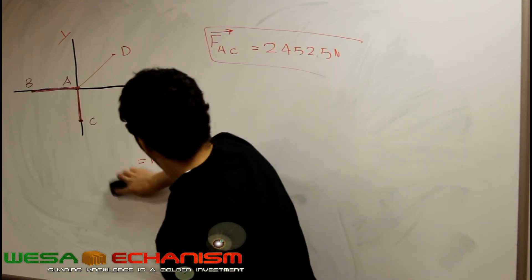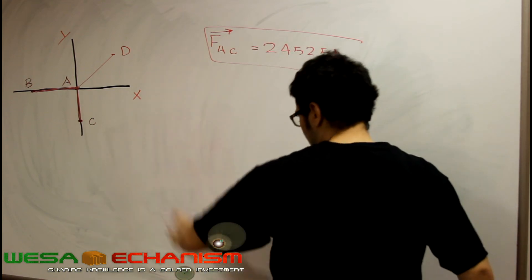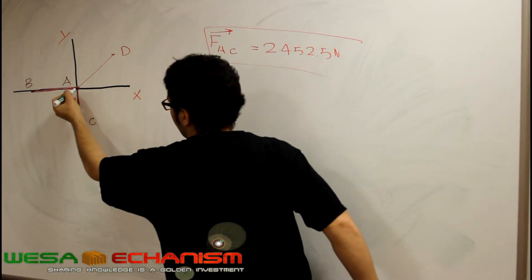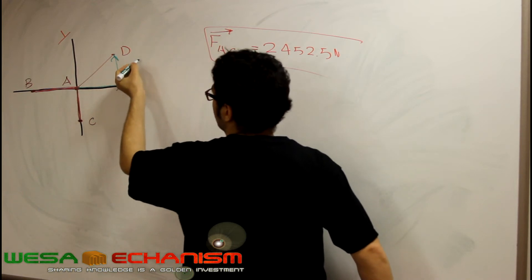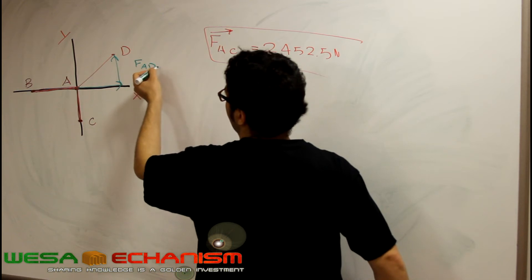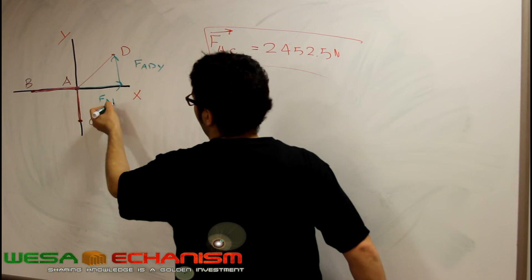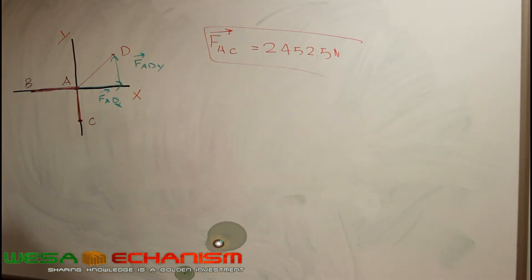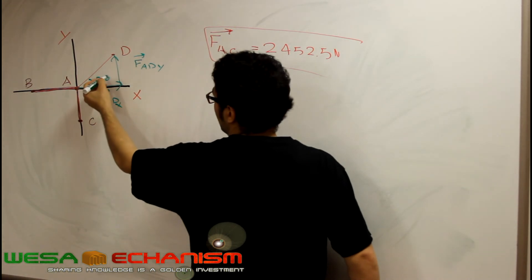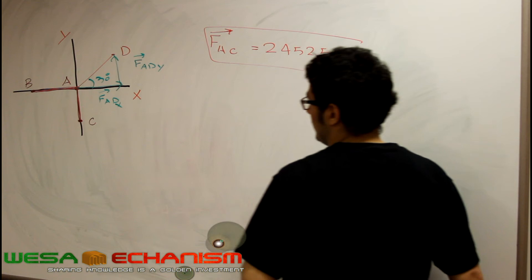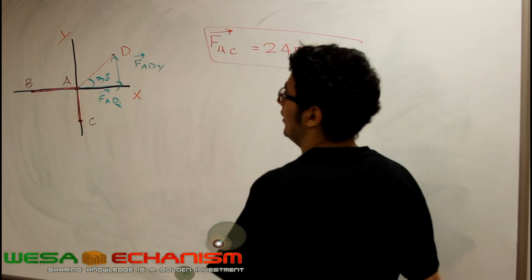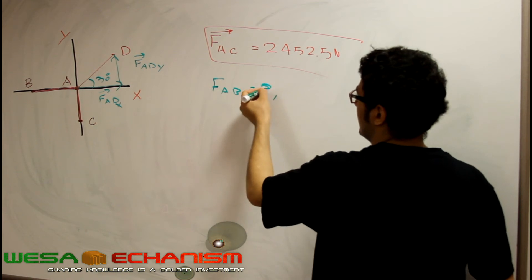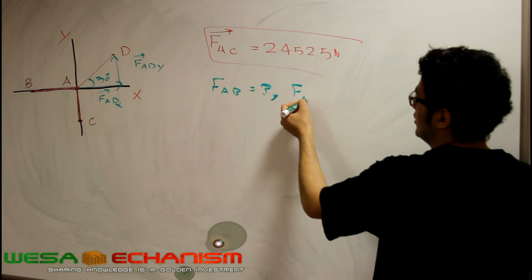Right now we are going to go ahead and compute the forces of FAD. I am going to draw the force in the X direction and the force in the Y direction. So this is going to be FAD in the Y direction, and this is going to be FAD in the X direction. The angle that is given in this problem is 30 degrees. We are going to compute these forces. We also have FAB, which is unknown, and FAD is also unknown.